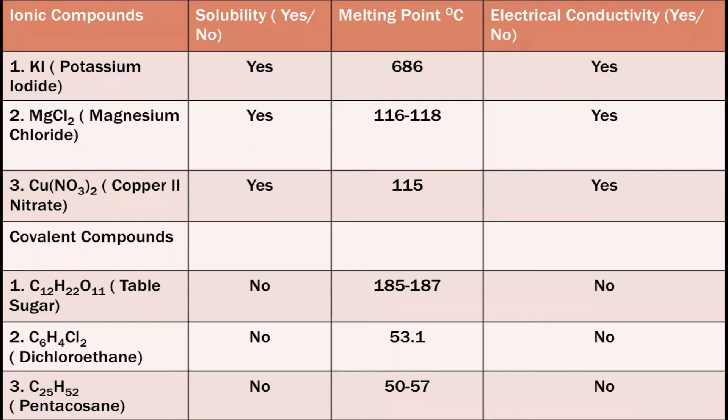Look at this table divided into two columns — ionic compounds and covalent compounds. Examples of ionic compounds are potassium iodide, magnesium chloride, and copper nitrate. For covalent compounds, we have table sugar, dichloroethane, and pentacosane. For ionic compounds, they are soluble; their melting points are 686, 116, 118, and 115 degrees — higher melting points — and they conduct electricity. Compared to covalent compounds, they are not soluble, their melting points are lower than ionic compounds, and they do not conduct electricity.